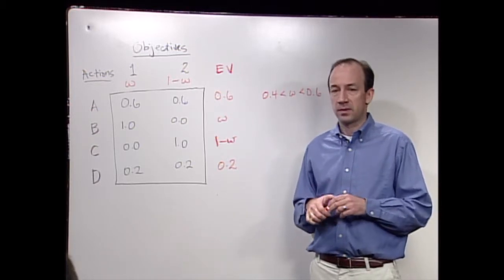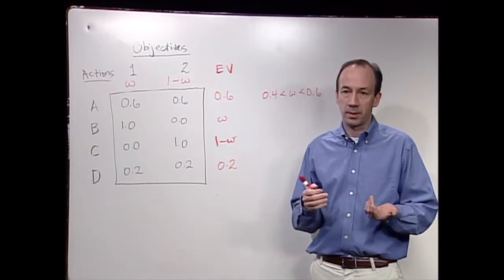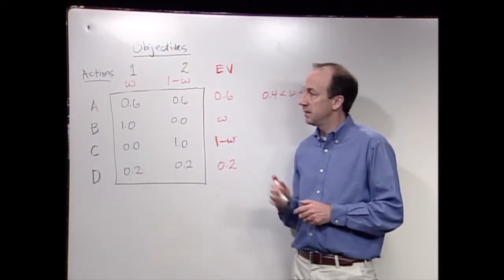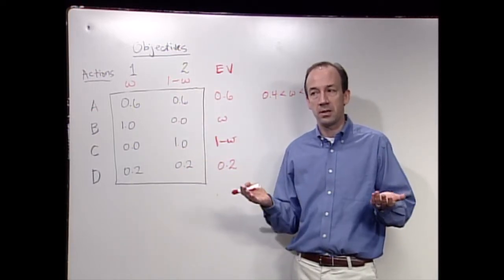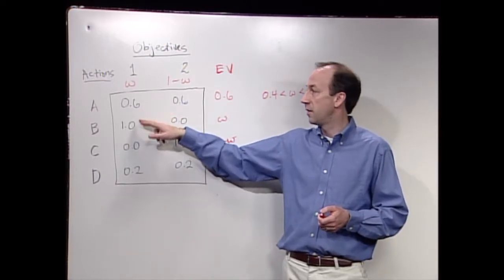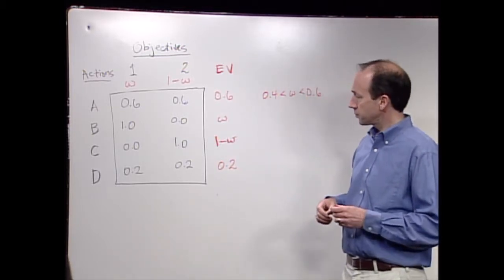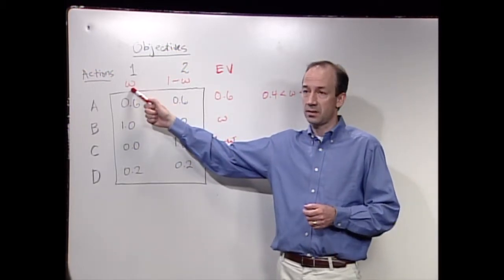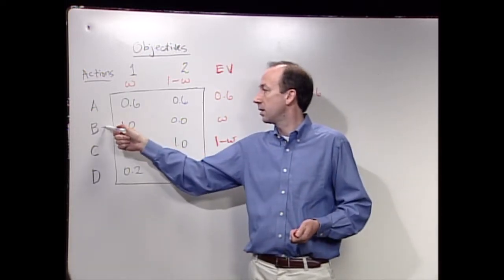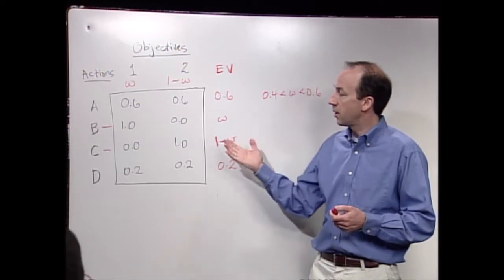But think about this from another perspective. What if these are two competing decision-makers? One decision-maker has objective one; the other has objective two. If they're independent, autonomous decision-makers, they're not obliged to compromise. If one has a weight greater than 0.6 and the other has a weight less than 0.4 on objective one, then the two decision-makers are competing - one would prefer B, one would prefer C - and they're not really willing to compromise. You reach this impasse and have trouble solving the problem.